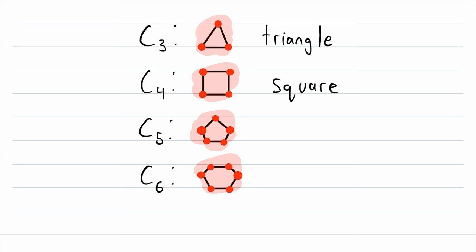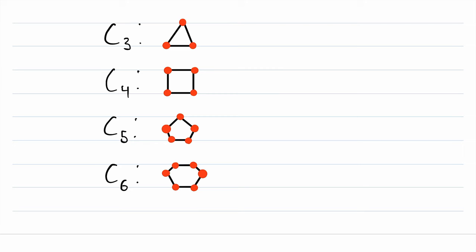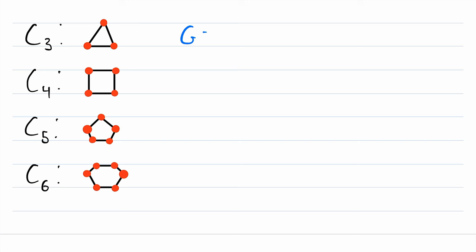So let's move these pictures a little out of the way and get a bit more of a formal description of cycle graphs. So let's say we have a graph G, it has vertex set V and edge set E. And let's say that the order of G is n, so G has n vertices.